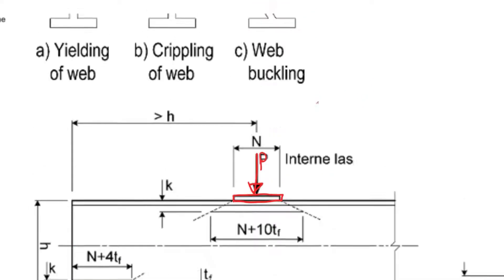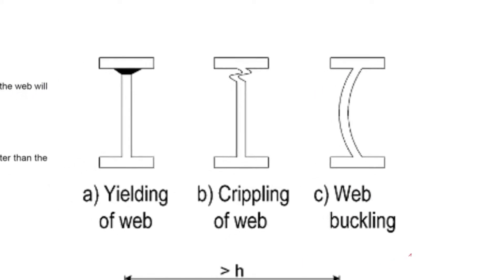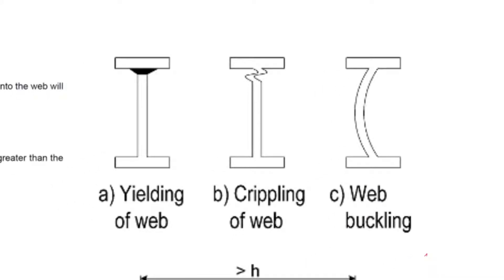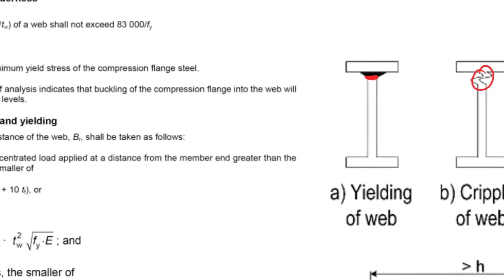There are three main failure mechanisms we can experience: yielding of web, crippling of web, and web buckling. Yielding is when the yield stress is exceeded at a distance down. Web crippling is a localized failure, a local buckle of the web. Web buckling is where the entire web buckles out.